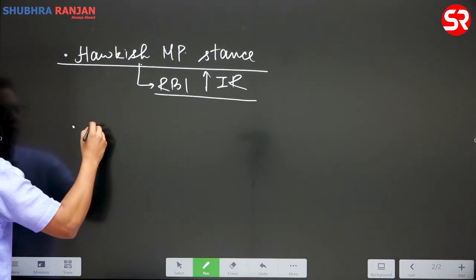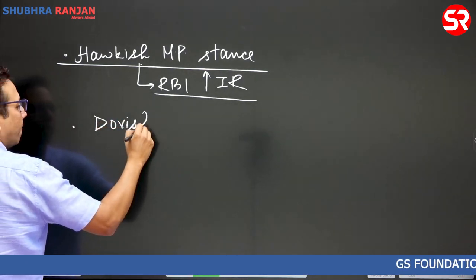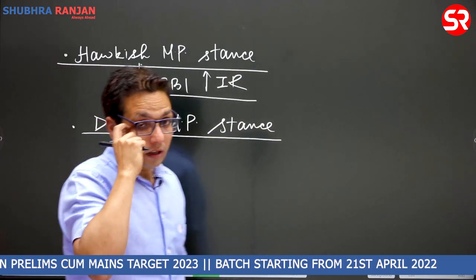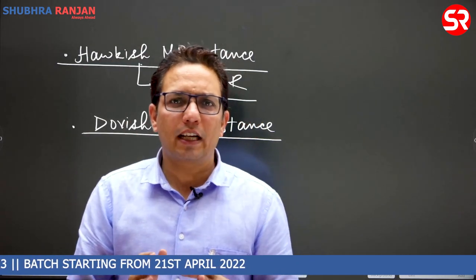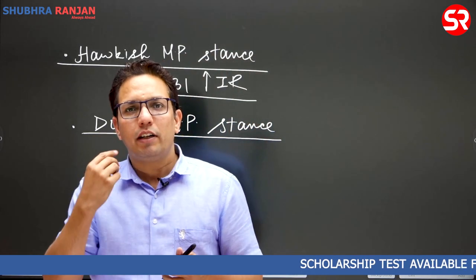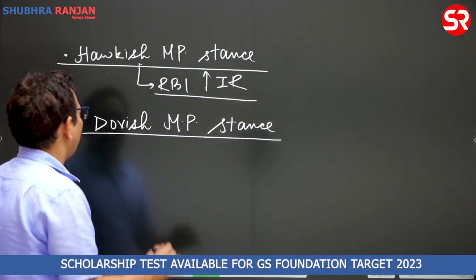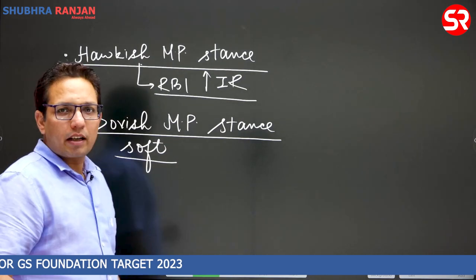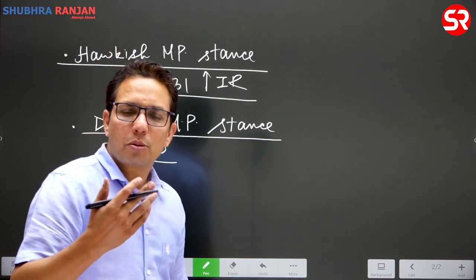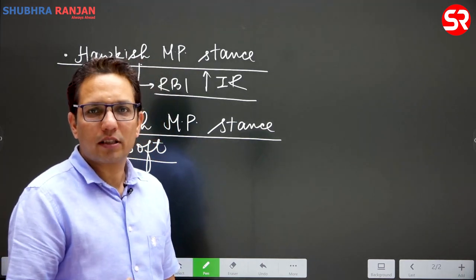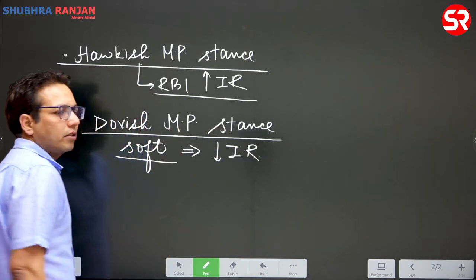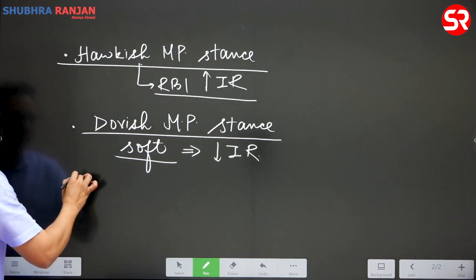Second is dovish monetary policy stance. Like the Dove soap ad where the side washed with Dove comes out very soft — dovish means soft. It means RBI is thinking that in future inflation will be very low. So RBI will also be very soft on inflation. In case of dovish monetary policy stance, RBI will reduce the interest rates.